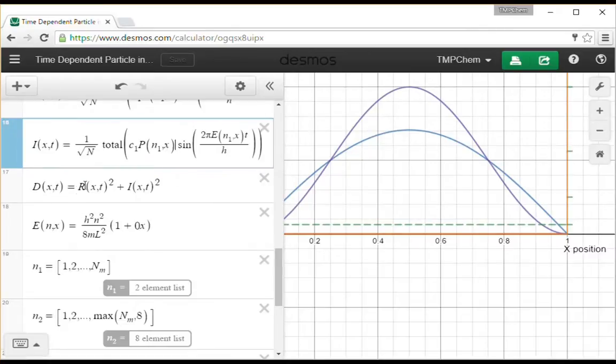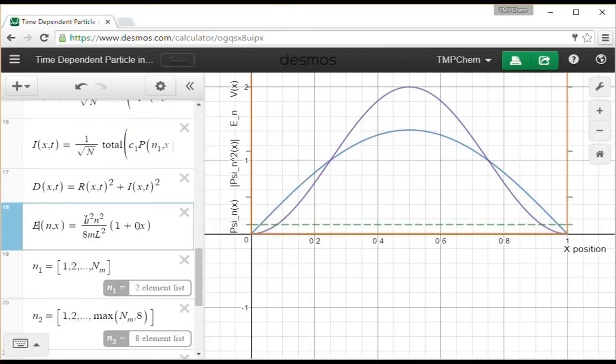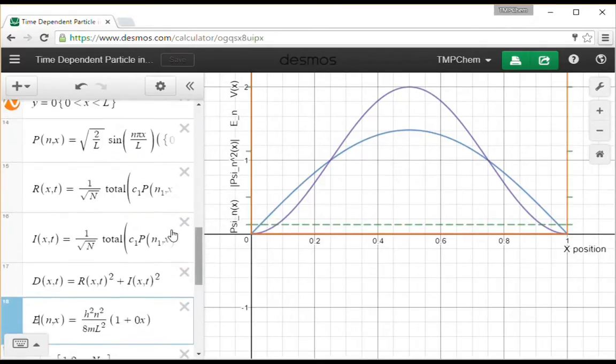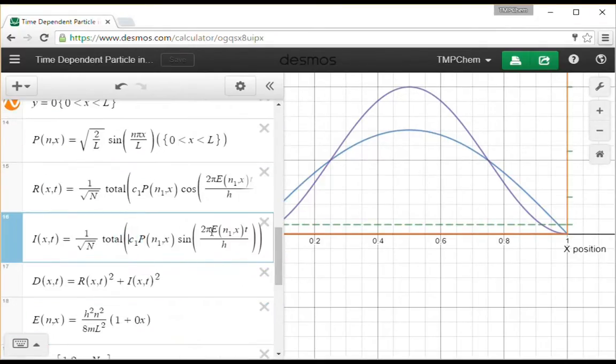The probability density is psi star psi, which is equal to the real part squared plus the imaginary part squared when you look at what the components of a complex number are once you square them. The energy levels are plotted h squared n squared over 8 m L squared inside the box. That's where we get our e that we're substituting into this real and imaginary part here.